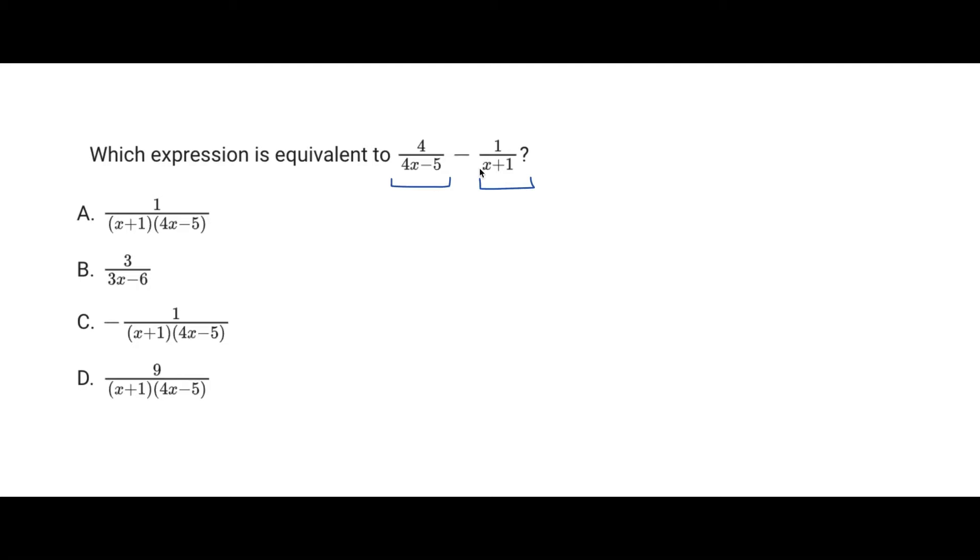And by doing that we also have to do the same thing to the numerator. So we'll see how that works. So we have 4 over 4x minus 5, and we will be multiplying this by x plus 1 over x plus 1. You can see that in reality we're just changing both top and bottom of the fraction because x plus 1 over x plus 1 is really just 1. And so here we'll get 4x plus 4 over 4x minus 5 times x plus 1.